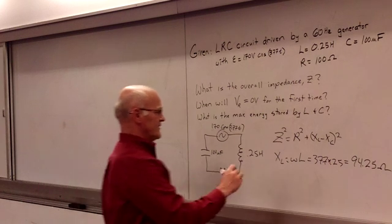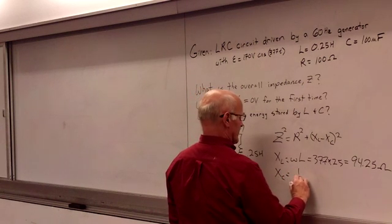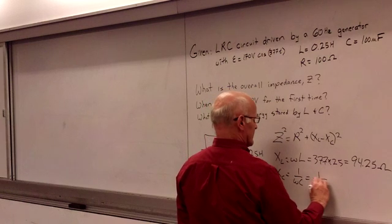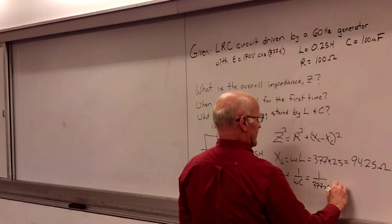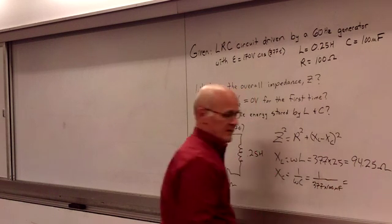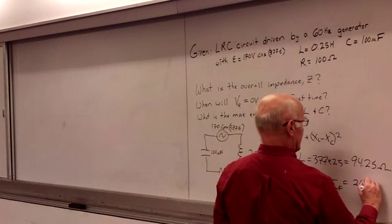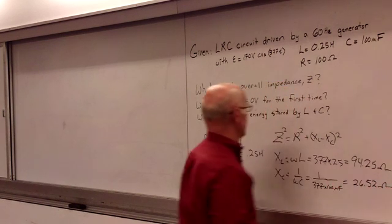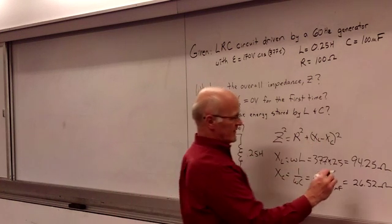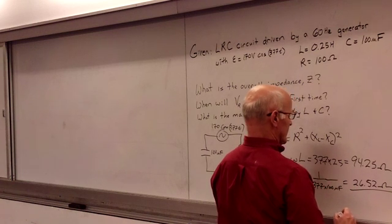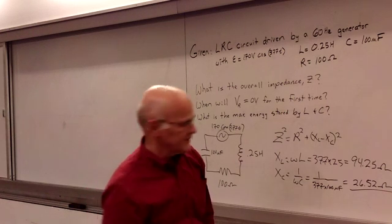And then what is XC? We can look at the capacitive reactance of our capacitor, and that's given by 1 over omega times C. So that's 1 over 377 radians per second times 100 microfarads. We get a value of 26.52. So when we take XL minus XC, we get a value of 67.73.